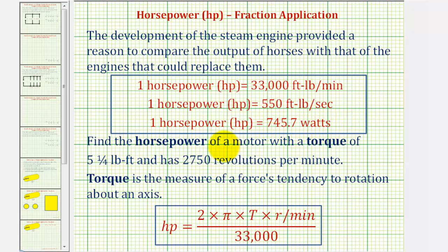So we want to find the horsepower of a motor that has a torque of five and one-fourth pound-feet and has 2750 revolutions per minute, where torque is the measure of a force's tendency to rotate about an axis.